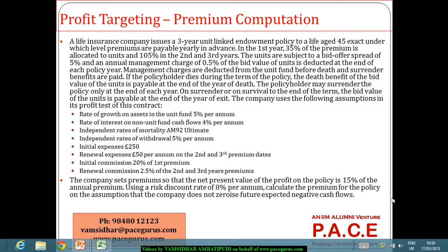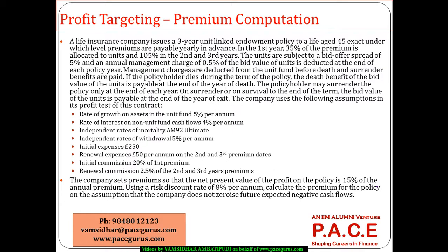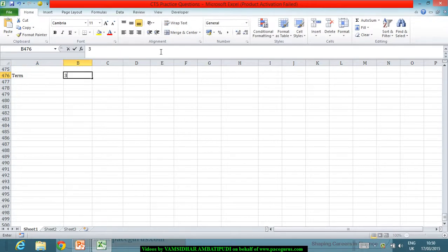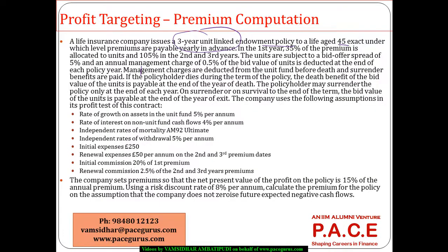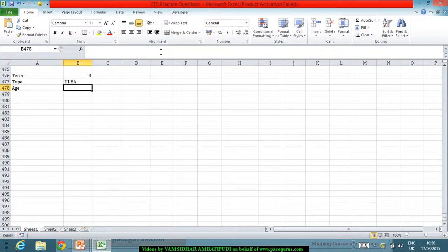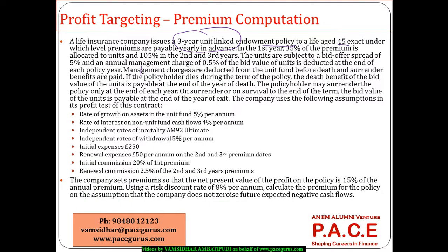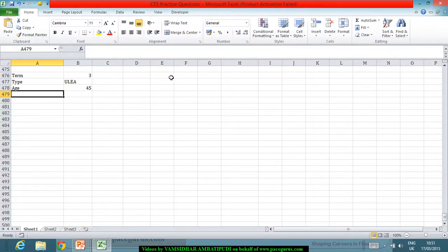Now let's try looking at this numerical on computing the premium based on profit targeting. A life insurance company issues a three-year unit-linked endowment policy for a life aged 45. The term is three years, the type is unit-linked endowment assurance policy, and the age is 45 years. Level premiums are payable yearly in advance.